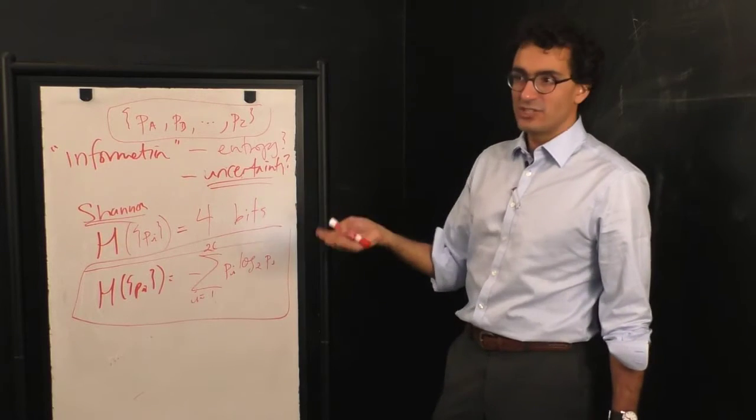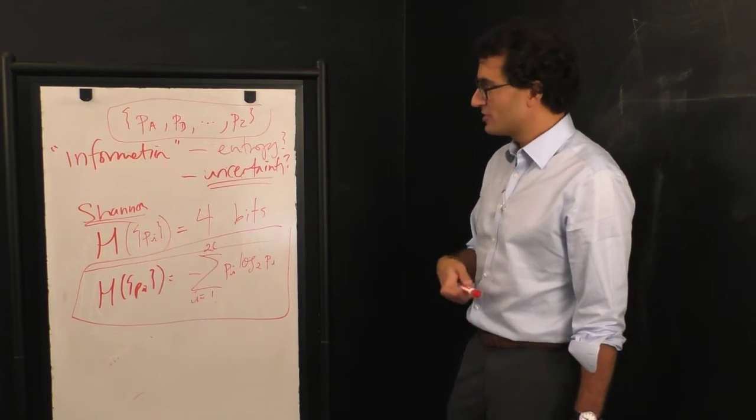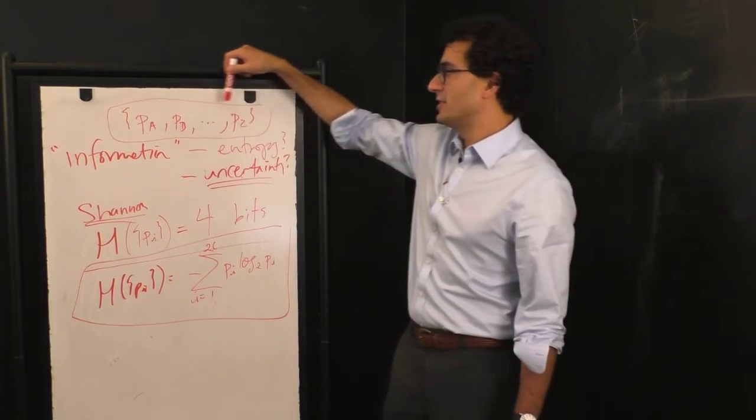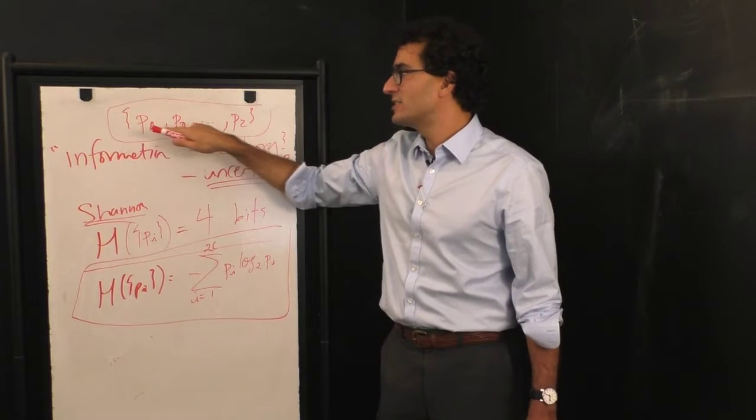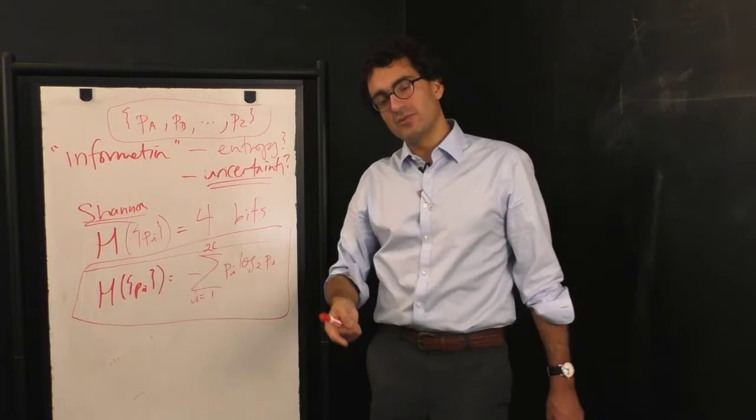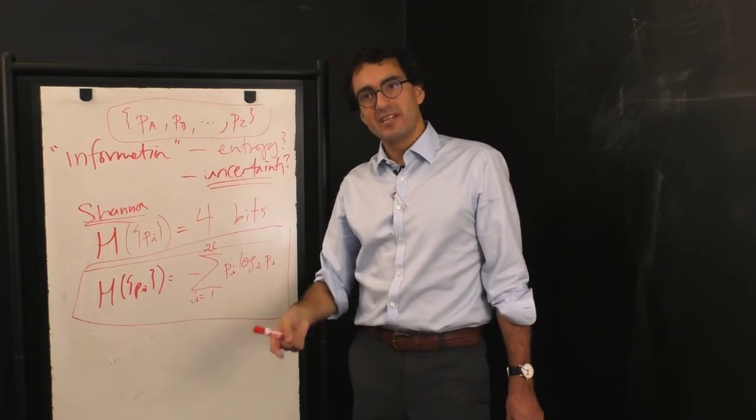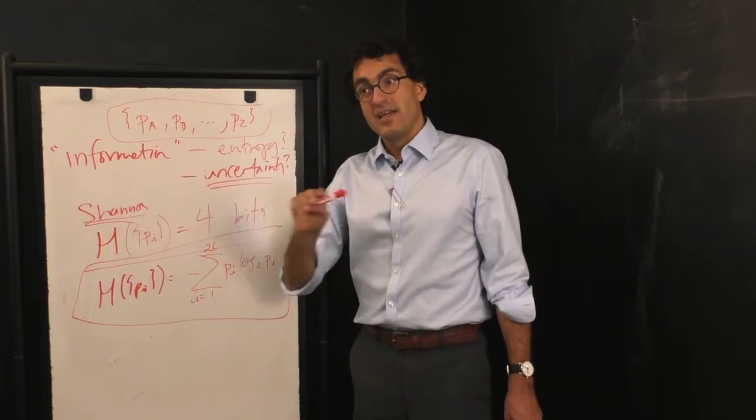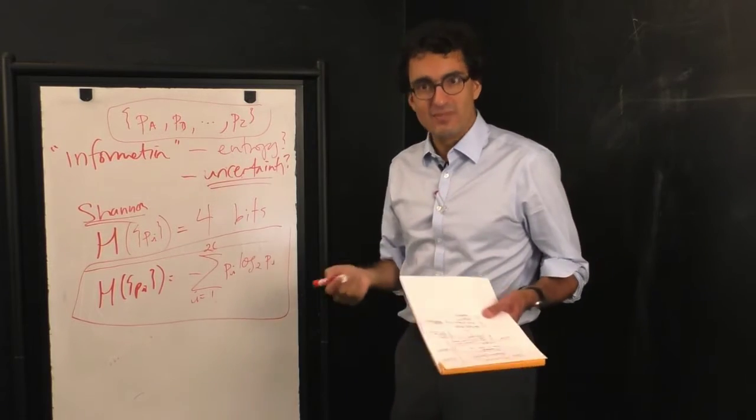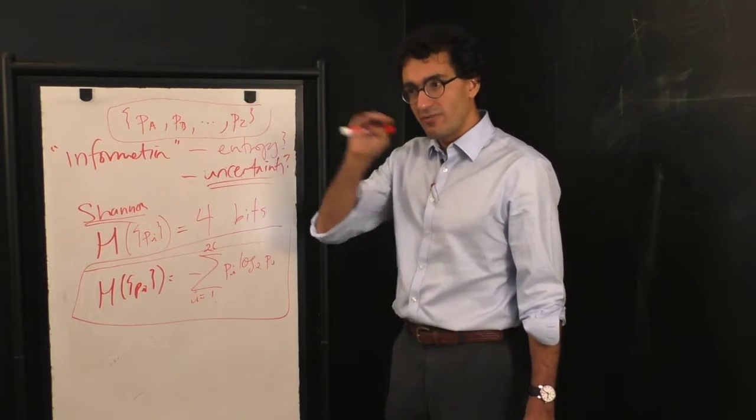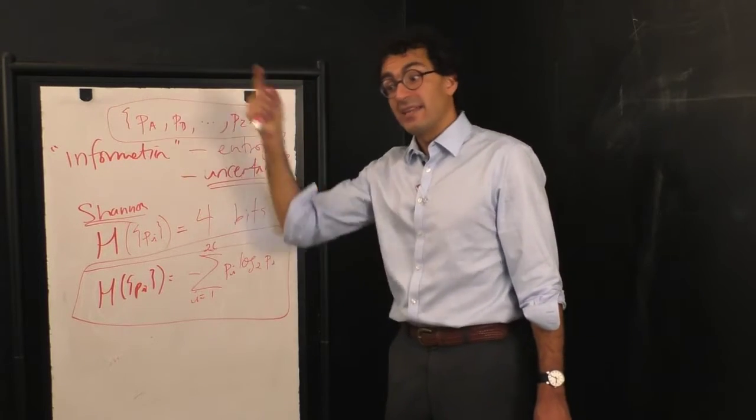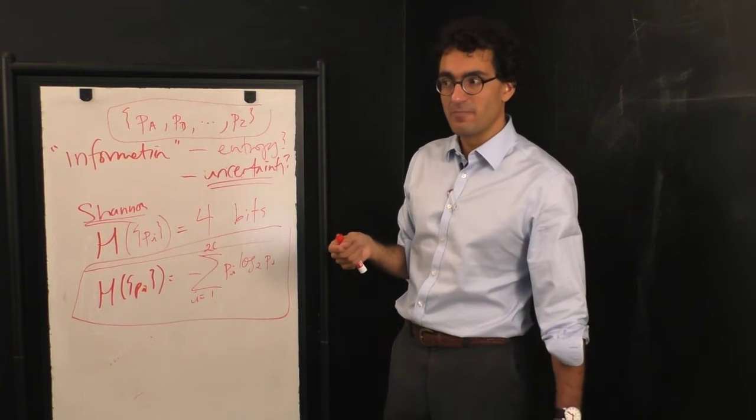He said, okay, if you want to measure uncertainty, here's a couple things that it should do. First of all, the maximum uncertainty that this distribution can have is that each of these probabilities is equally likely. Okay, so if the probability of A is 1 in 26, the probability of B is 1 in 26, and all the way down to Z, that should mean, if that's the case, you should be maximally uncertain about what's going to happen. That's the first thing he said. The more uniform, rather, if it's perfectly uniform, if the probabilities are perfectly uniform, that should be the condition of maximum uncertainty.